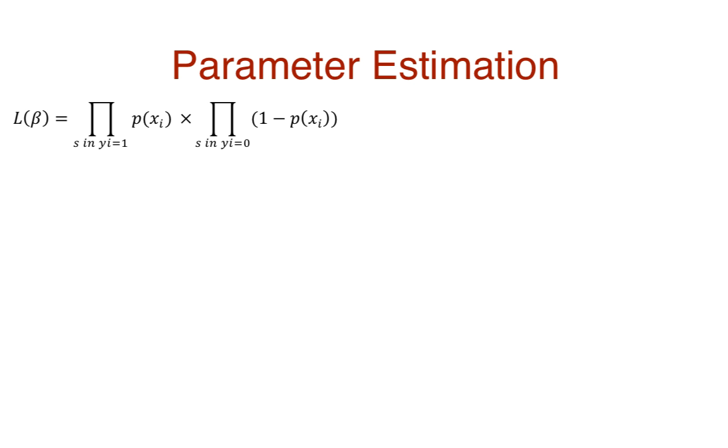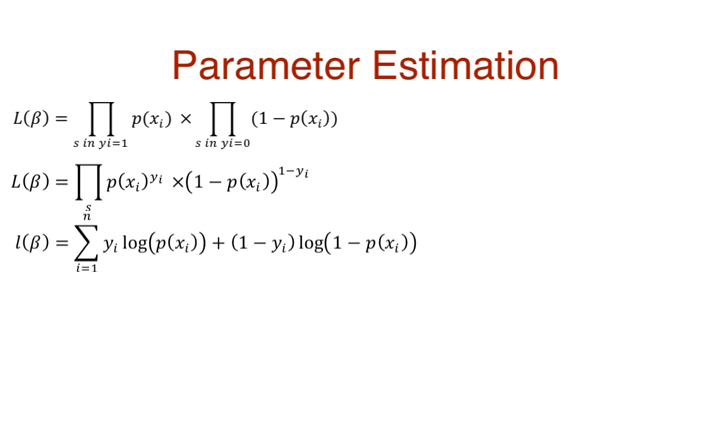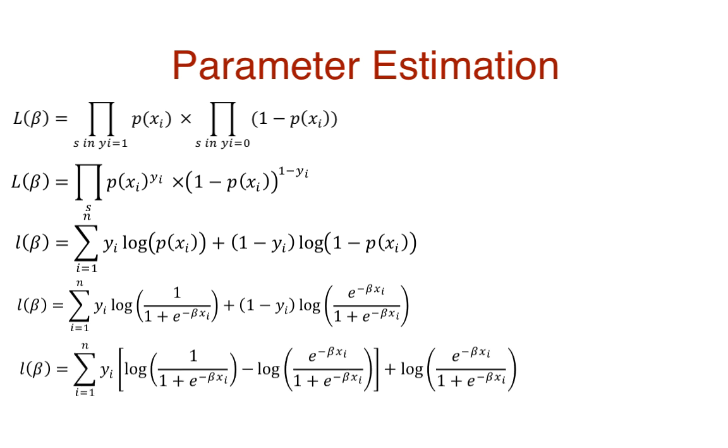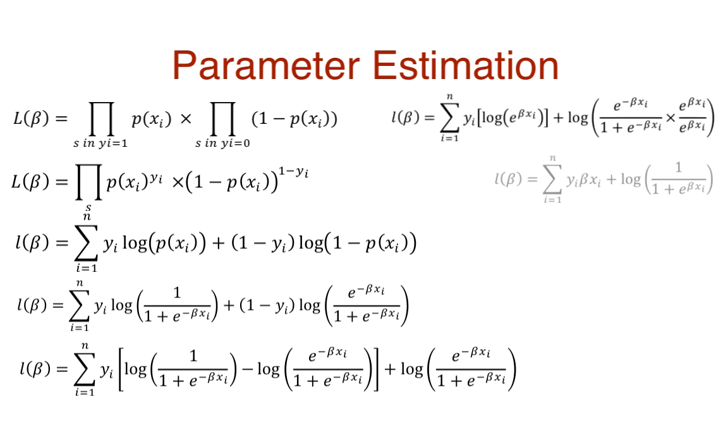This function that we need to optimize is called the likelihood function. We can then combine the products. Now we can take the log likelihood and convert this into a summation. So here the small l represents the log likelihood. Let's substitute p(x) with its exponent form. We now group the coefficients of yi, continue simplification of both terms. And now we end up with the final form of the log likelihood function, which is to be optimized. The goal is to find the value of beta that maximizes this function.